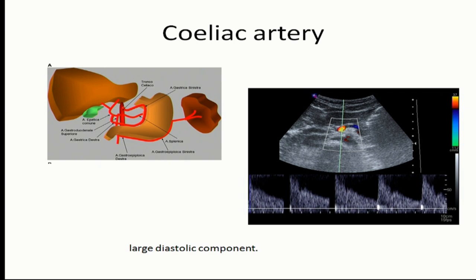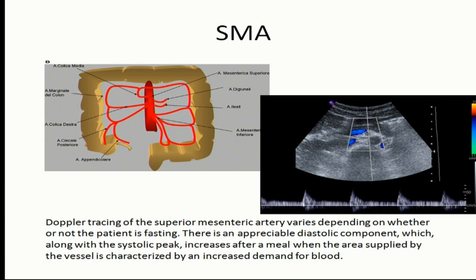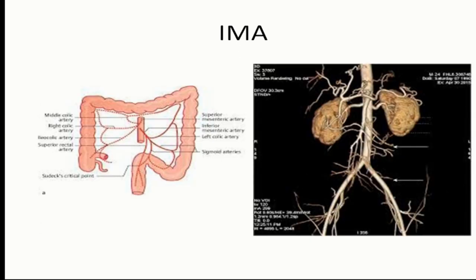Coming to the branches: celiac artery on Doppler shows high systolic flow. Always look at the SMA — it supplies the small bowel and part of the large bowel. You cannot see many branches on ultrasound, so try to see them on CT angiography or MRI. The IMA is a small branch coming from the abdominal aorta. IMA importance: when there is SMA occlusion, the artery of Drummond — supplied by IMA — takes over supplying to the SMA branches.